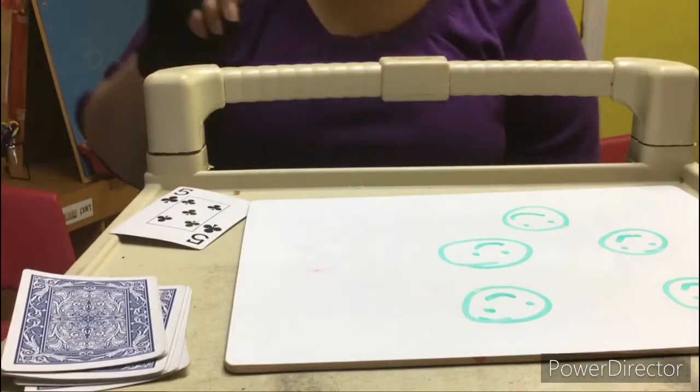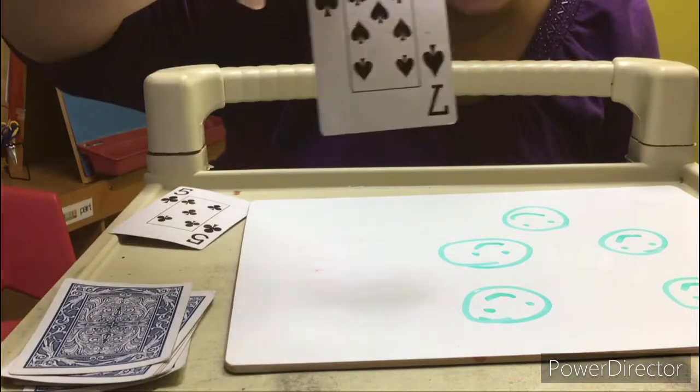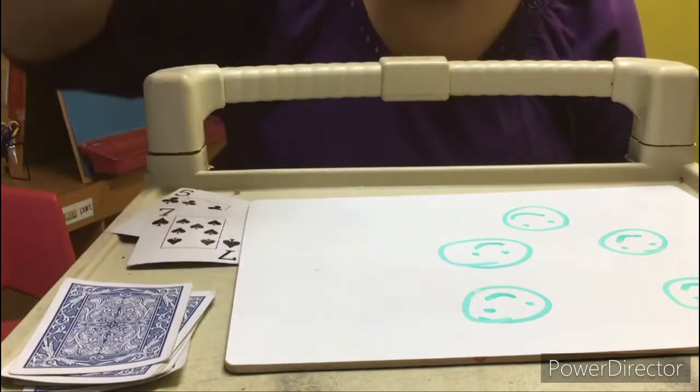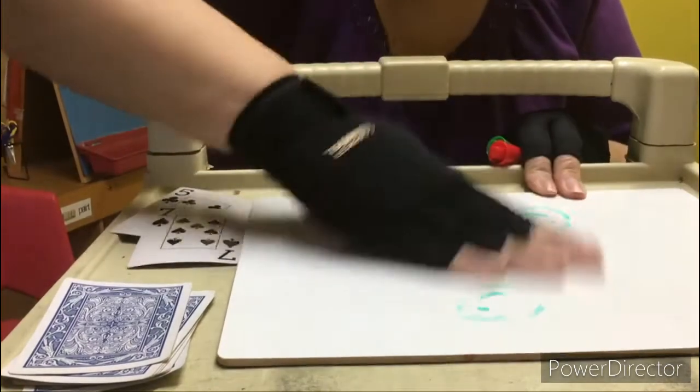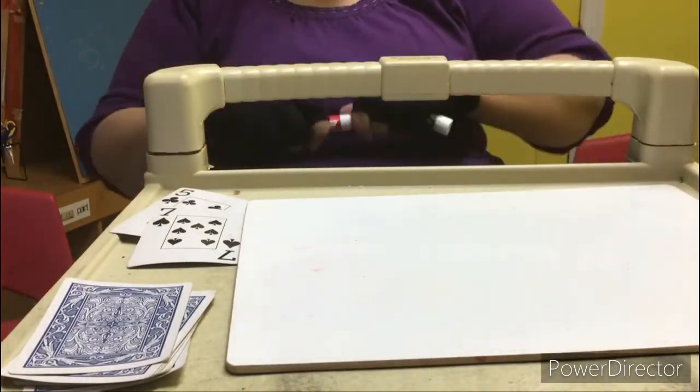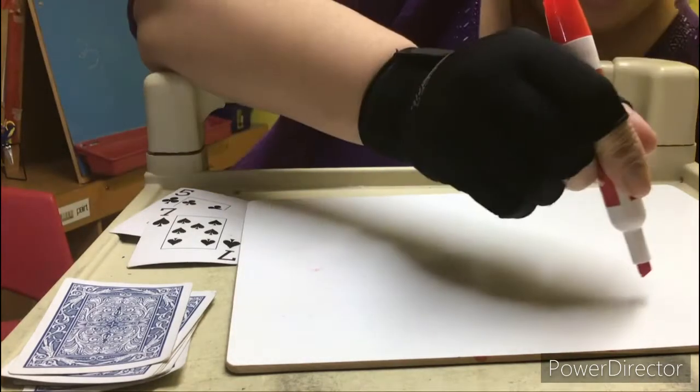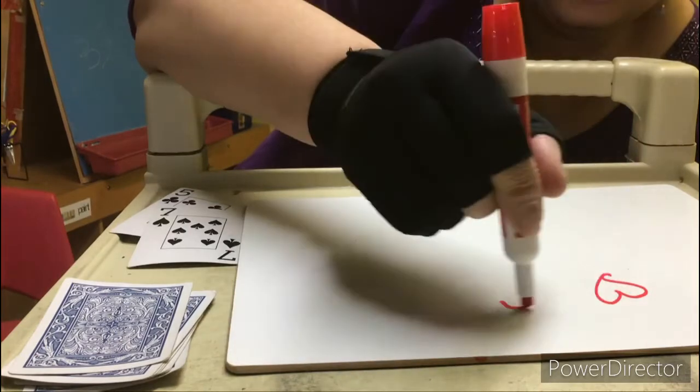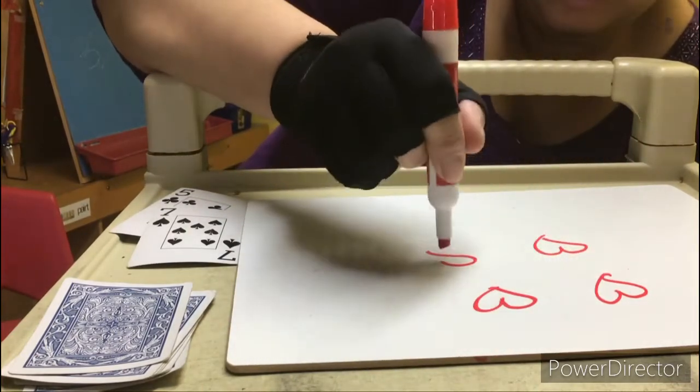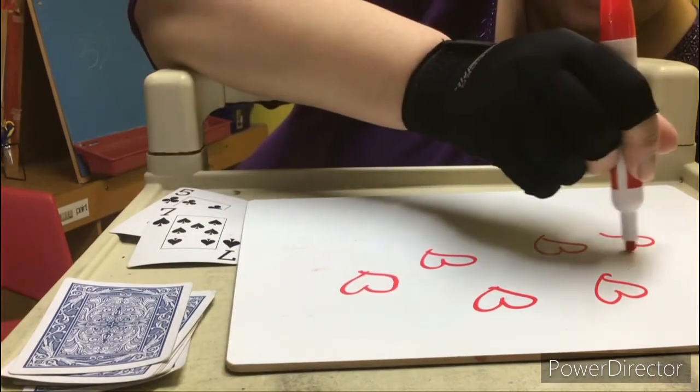I wonder what we're gonna draw this time. What number did I draw? Seven! So I have to draw how many, friends? I have to draw seven this time. So let's see, I'm gonna draw hearts: one, two, three, four, five, six...